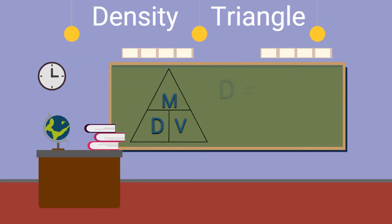For example, if we need to find density, we cover up the D, and what is left is M over V. So the formula to find density is mass divided by volume.